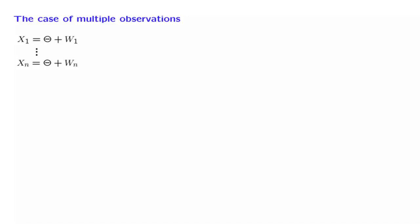We are now ready to move on to a model which is quite interesting and quite realistic. This is a model in which we have an unknown parameter modeled as a random variable that we try to estimate. This is the random variable theta, and we have multiple observations of that random variable.